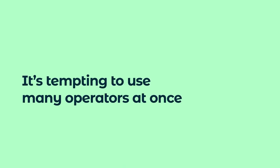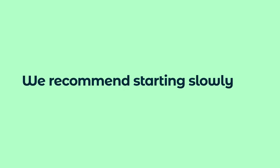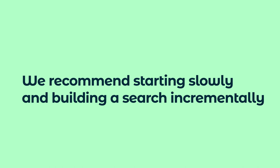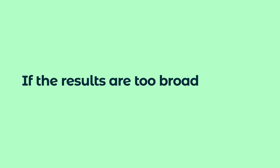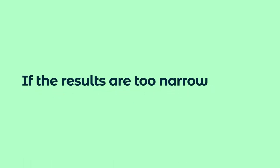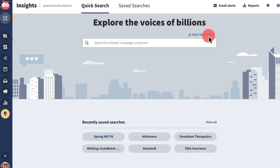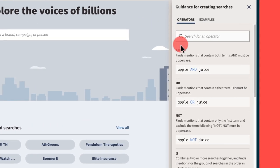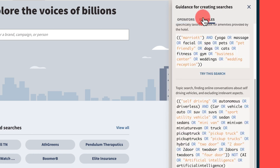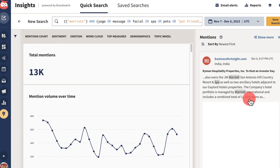It's tempting to use many operators at once, but we recommend starting slowly and building a search incrementally. If the results are too broad, add operators to refine them. If the results are too narrow to uncover actionable data, remove some. Click the link to open a helpful sidebar where you can find all the different Boolean operators and how to use them, and advanced examples that you can try and edit to fit your needs.